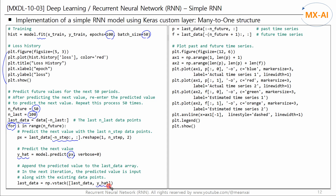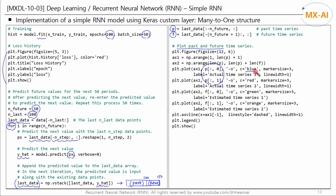We append each predicted value to the last data array so that in the next iteration, the predicted value is input along with existing data points. Repeating this 50 times appends 50 predicted values, making the last data array length 150 — the first 100 are past time series and the last 50 are predicted future time series. P is the past time series and F is the future. We plot the past two time series in blue and red, and the two predicted future time series in green and orange.